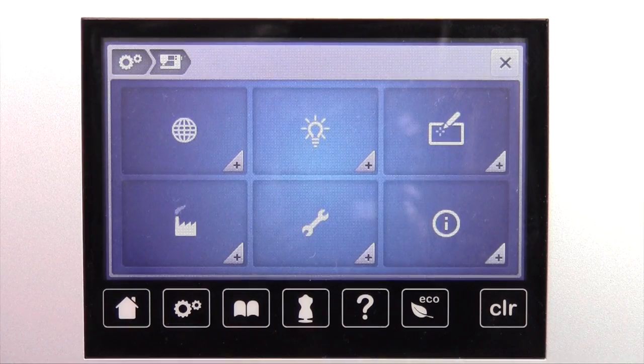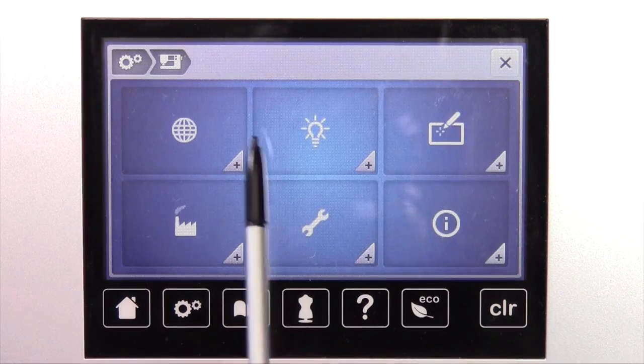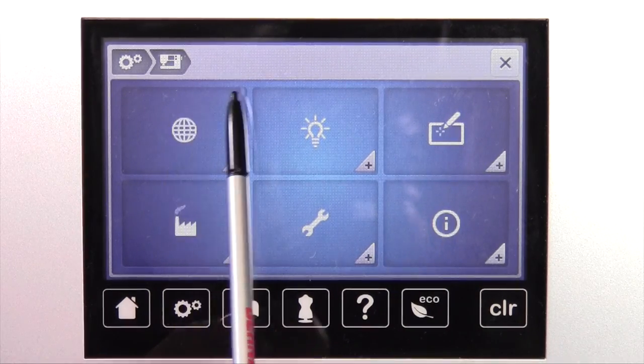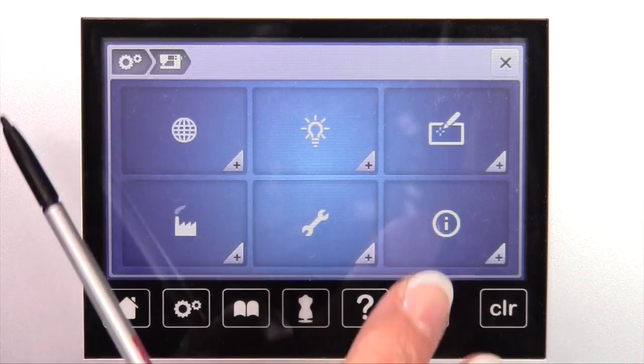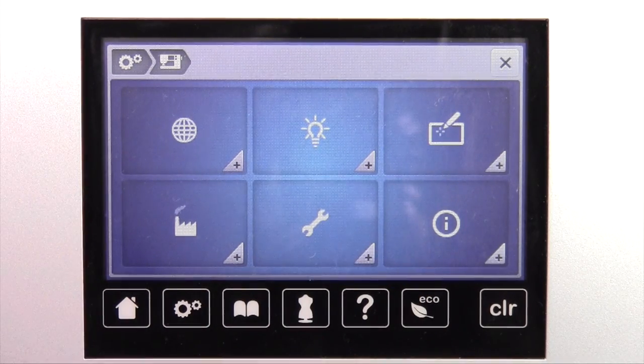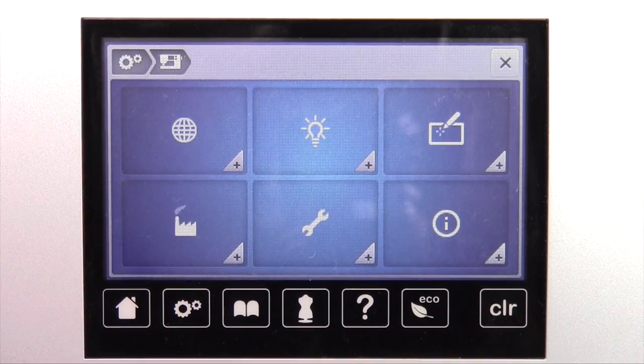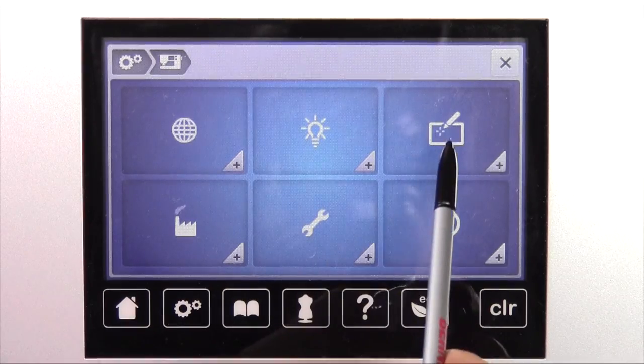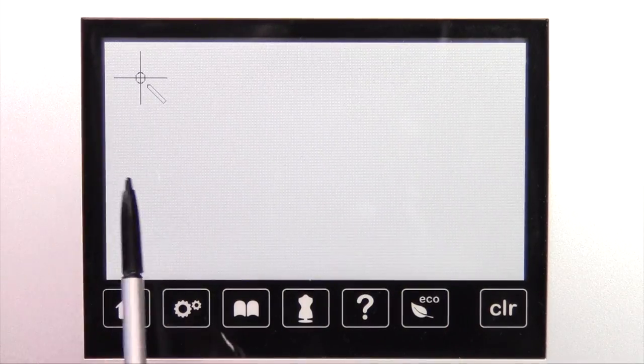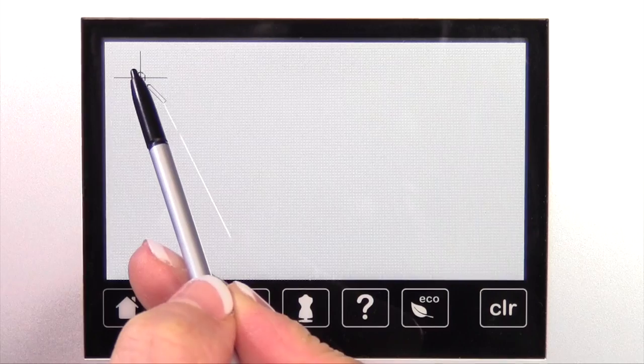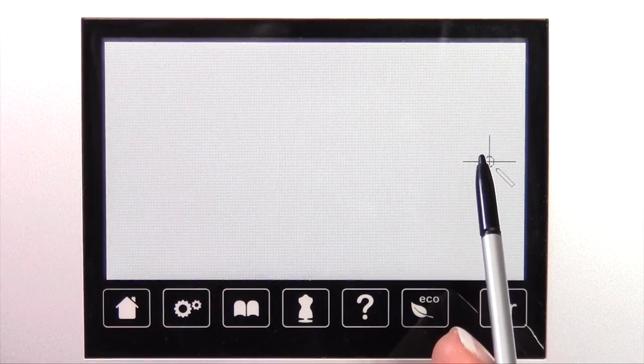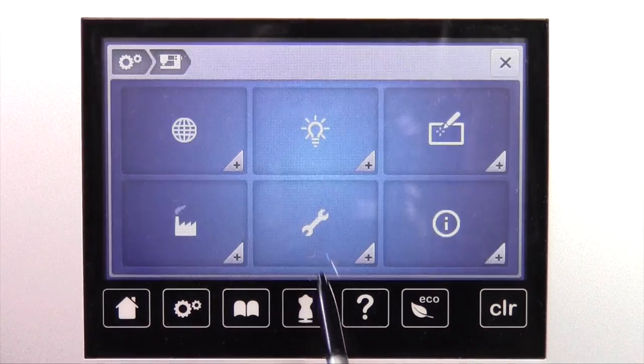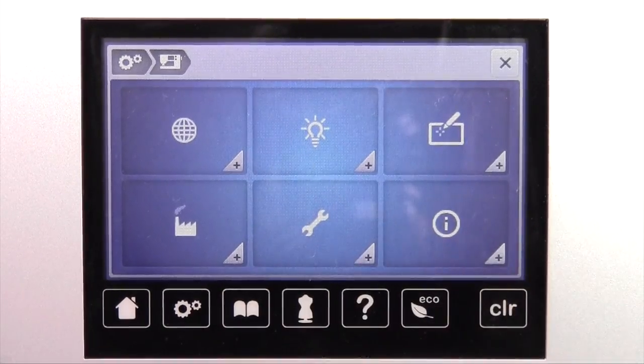Now, this next one is a screen calibration. If you're ever touching a function and you seem to be getting the function next to it, sometimes the screen will change slightly and you can recalibrate it on your own. Watch how this is going to go. When you do it, the screen is going to go blank. What I must do right now is take my stylus and touch in the middle of each of these little crosshairs and what it's doing is realigning the screen. It makes it, well, perfect.